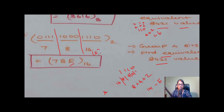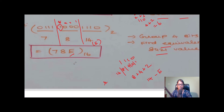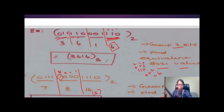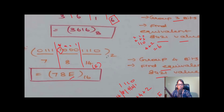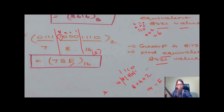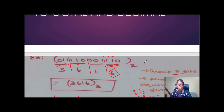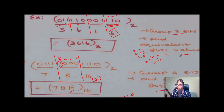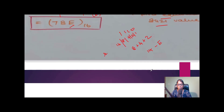Continuing: 1 0 0 0 — only the 8 bit (2 to the power 3) is present, so its value is 8. Then 0 1 1 1 gives 7. So the equivalent hexadecimal value is 7 8 E. To summarize: to find the octal value, group binary digits into three bits and find the equivalent 8421 value; to find the hexadecimal value, group into four bits and find the equivalent 8421 value.